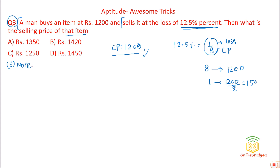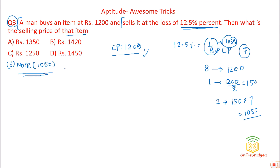When buying at 8 rupees with a 1-rupee loss, the selling price is 7 rupees. So 1 = 150, and 7 = 150 × 7 = Rs. 1050. The answer is Rs. 1050.